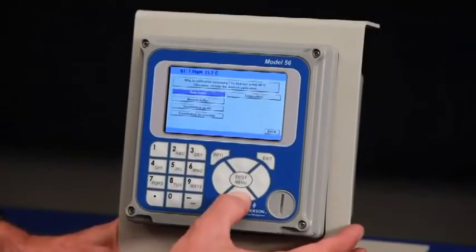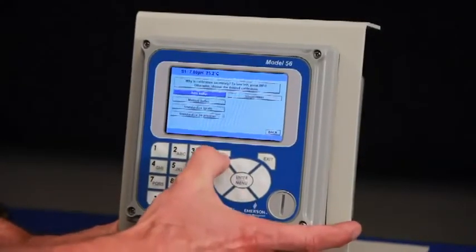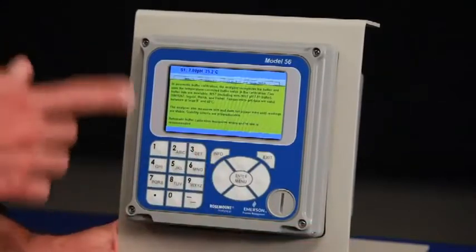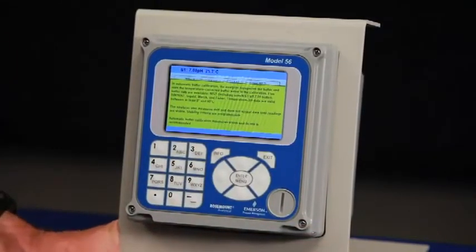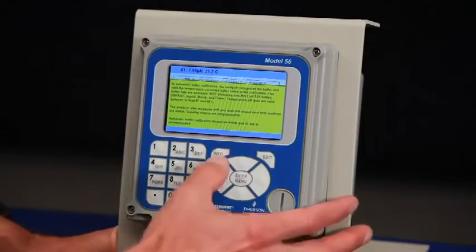Let's choose auto calibration. For detailed information about that process, an information screen is available to help give those details to the technician for this process.